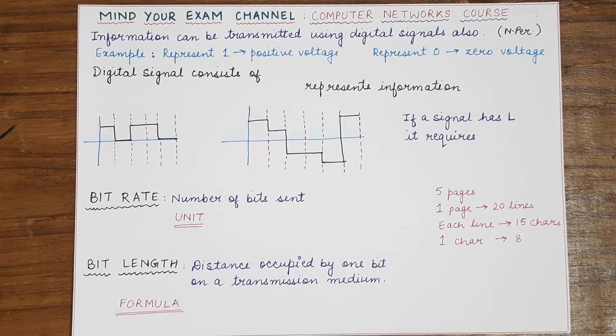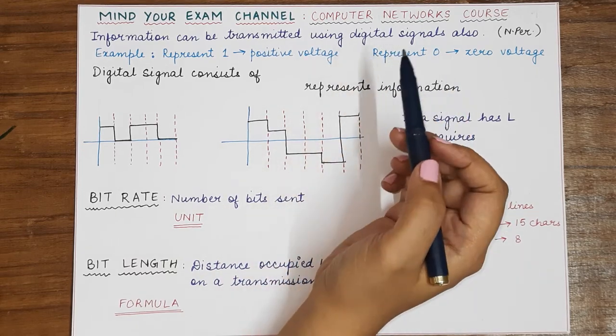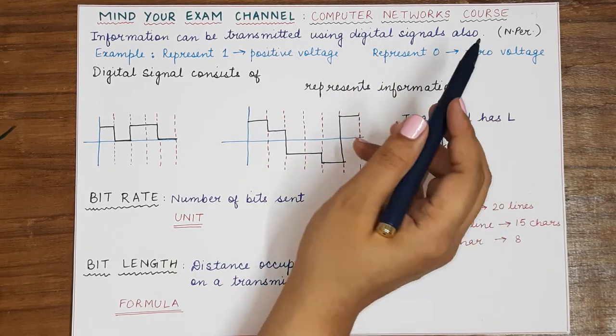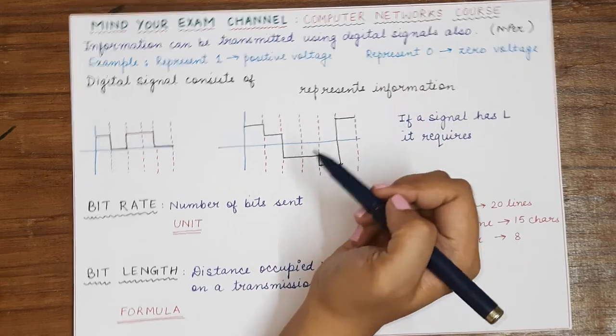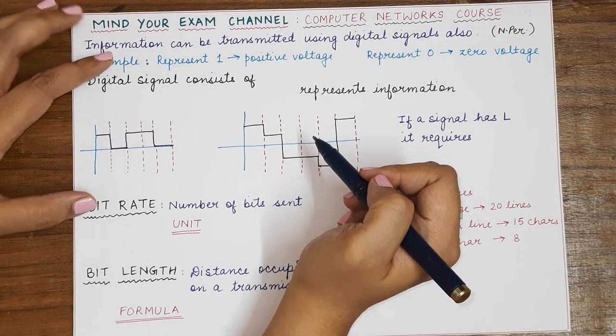So in the previous two videos we had studied what are analog signals, what are periodic and non-periodic signals, the phase, wavelength, bandwidth, and most of these properties like peak amplitude, frequency, and period were related to an analog signal.